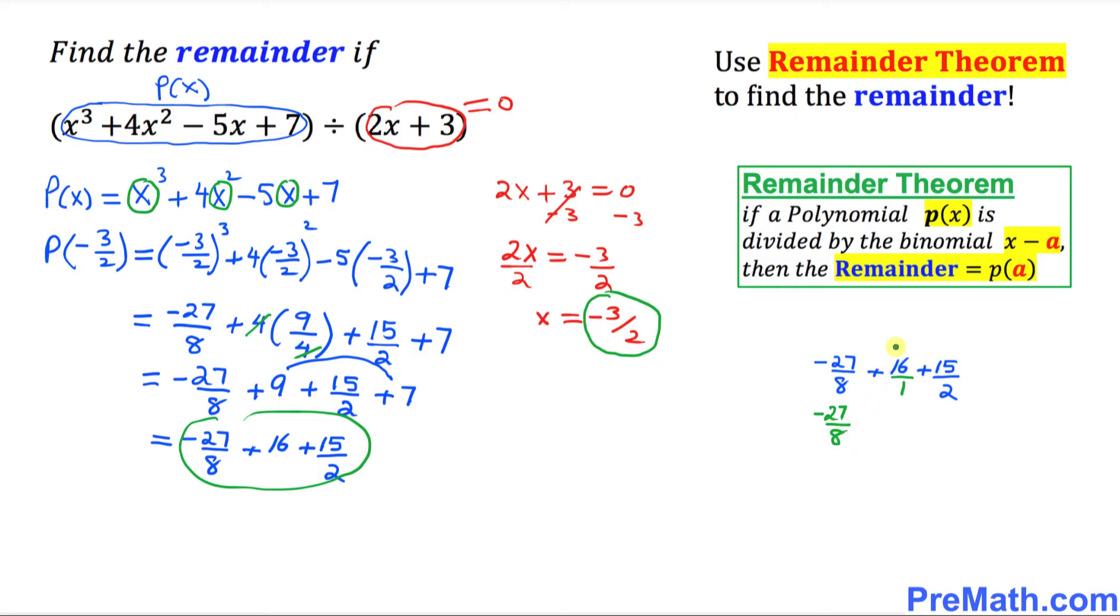So I can write this one negative 27 over 8. If I multiply to make sure this is 8 and 8, we are going to get plus 16 times 8 is 128 over 8. Here 60 divided by 2 times 4 is 8.